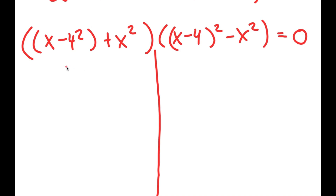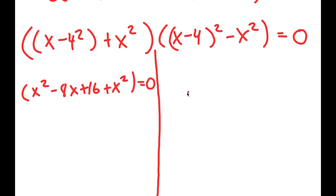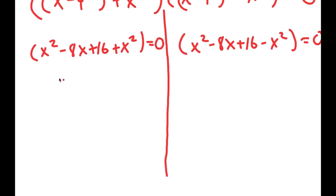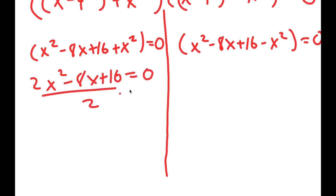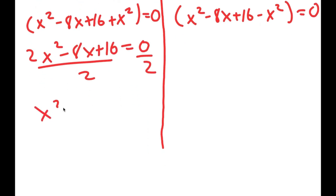So now I get [(x minus 4) squared plus x squared] times [(x minus 4) squared minus x squared] is equal to 0. Now, (x minus 4) squared is equal to x squared minus 8x plus 16. So I have (x squared minus 8x plus 16 plus x squared) equals 0 as one equation, giving me 2x squared minus 8x plus 16 equals 0, and dividing by 2: x squared minus 4x plus 8 equals 0.